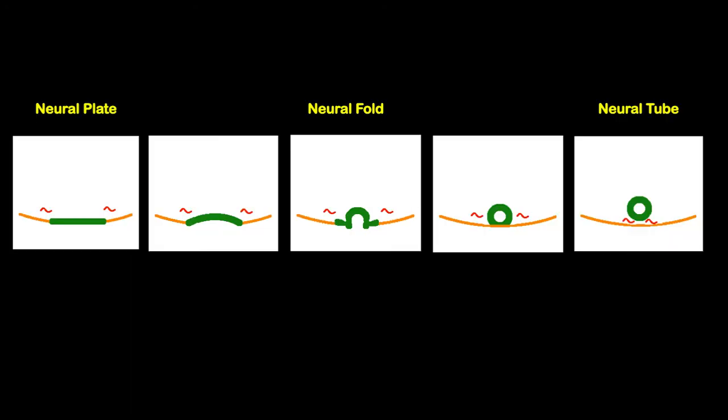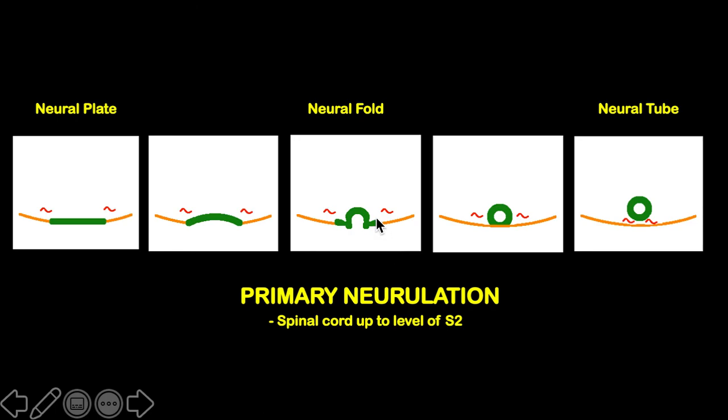This process where the neural plate develops folds and forms a neural tube is called primary neurulation. This process occurs in the spinal cord up to the level of S2.